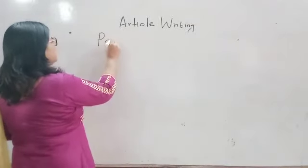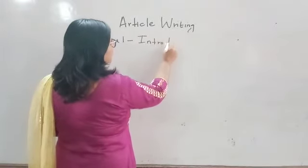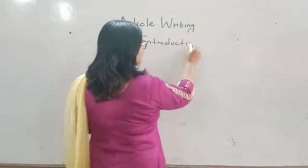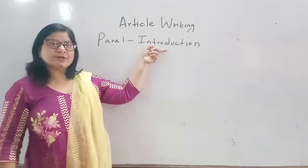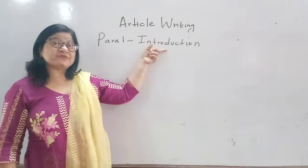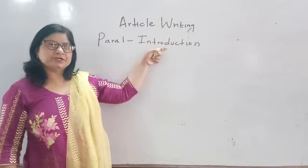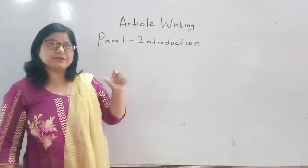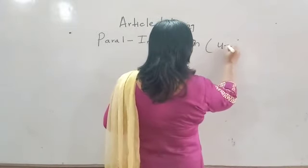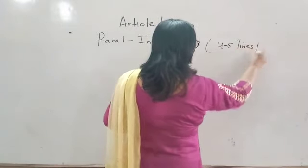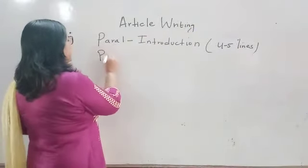Paragraph 1 is about the introduction. You can write quotations or you can write startling facts in this paragraph to attract the attention of the reader. It should be very brief — it should be written in 4 to 5 lines.